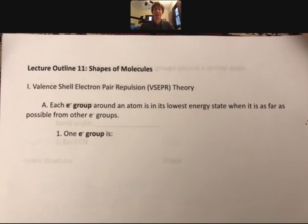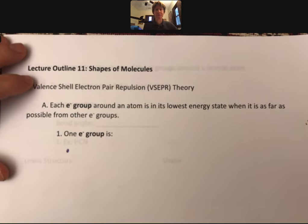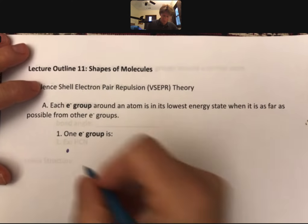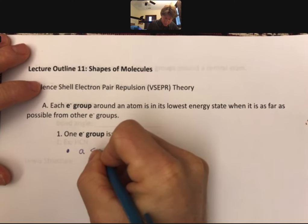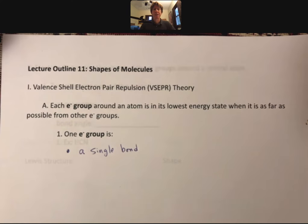Now, one electron group is a single bond, one electron group is a double bond.